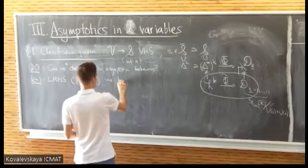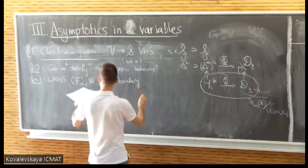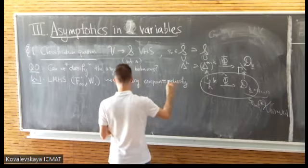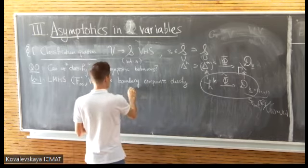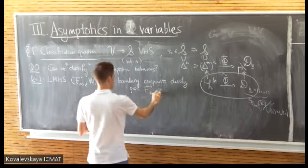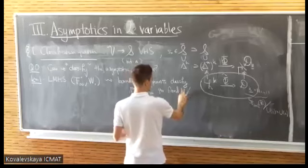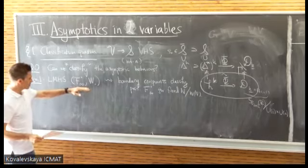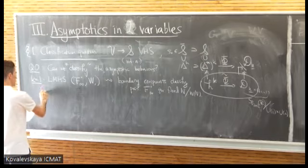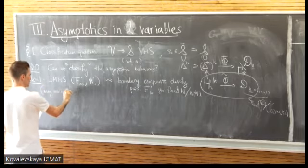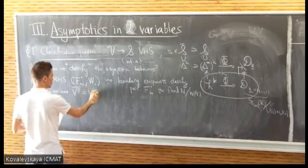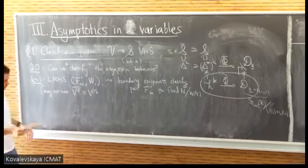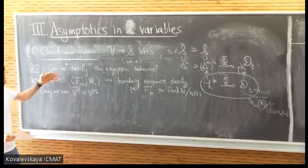There are things called boundary components in which these things live. Boundary components classify a repository or classifying space for possible F-infinities, for a fixed N or W. This may not be R-split, but it makes a Hodge structure. So you may not have F^{p,q}-bar equal to F^{q,p} on the nose — it may be modulo stuff with A smaller than p and B smaller than q — but you can fix this, which makes the problem a little bit simpler.